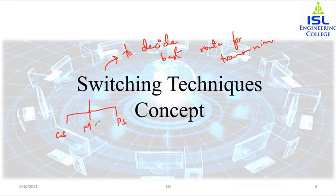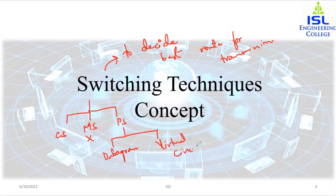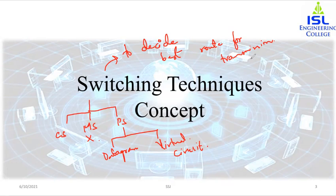There is one more switching technique, which is message switching, which we won't be studying. In packet switching, we will have two kinds of approaches: one is the datagram approach and the other is the virtual circuit approach. In yesterday's class, we covered circuit switching. So in today's class, we will be proceeding with packet switching and the two types of approaches — datagram and virtual circuit.